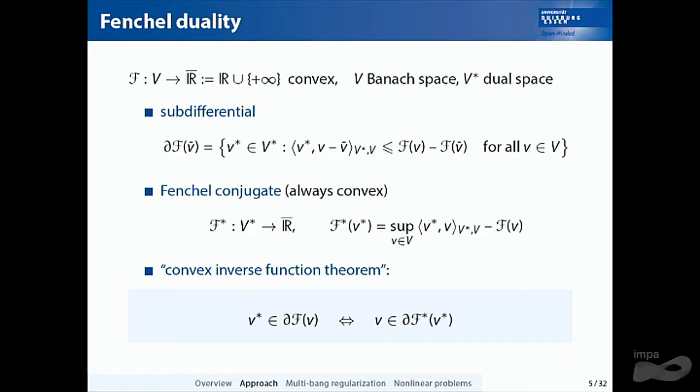The sub-differential is the set of slopes of all possible tangents to the function at a given point. If the function is differentiable, there is only one tangent and its slope gives the derivative. If there is a kink, several tangents are possible and all their slopes form the set. Crucially, if zero is in the sub-differential — a horizontal tangent exists — then F(V-bar) ≤ F(V) for all V, so V-bar is a global minimizer.